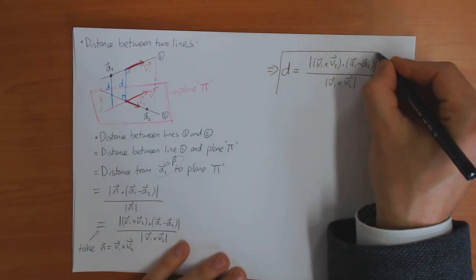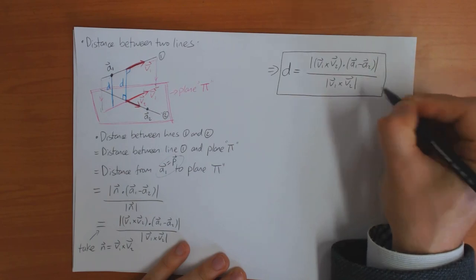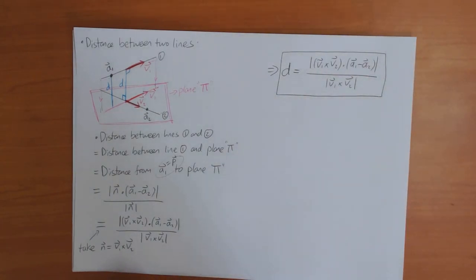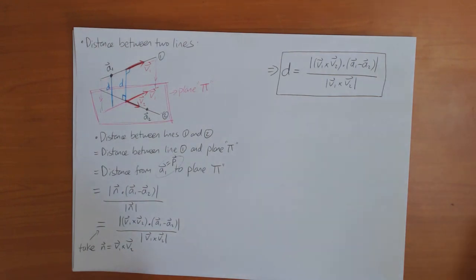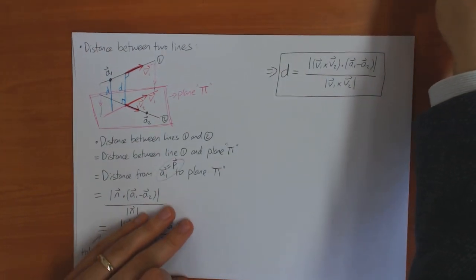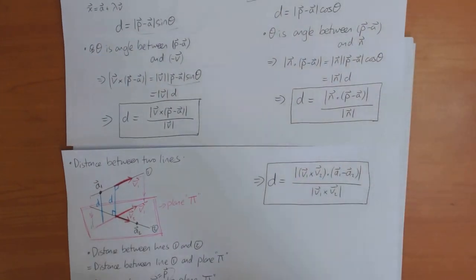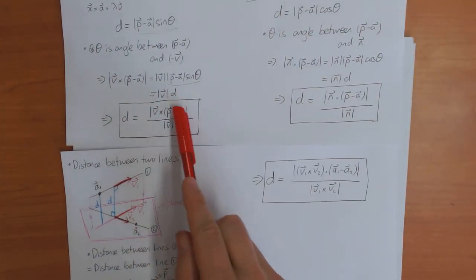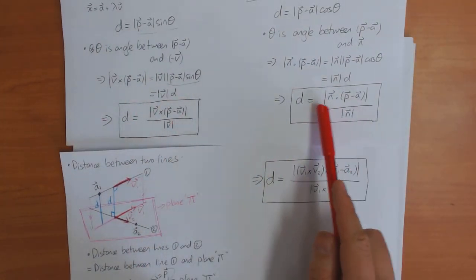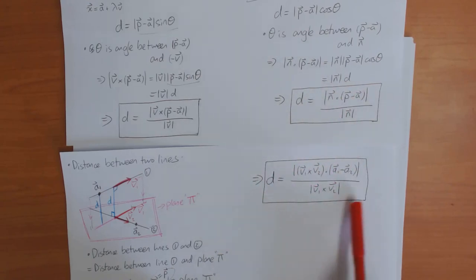On the practice worksheet this week there are questions calculating distances between points and lines, points and planes, and lines and lines. To complete the worksheet you need the three formulas: point to line, point to plane, and line to line.